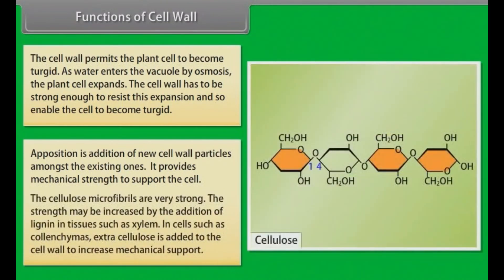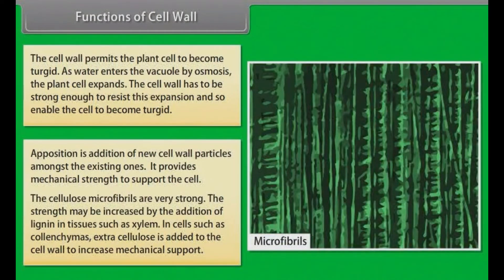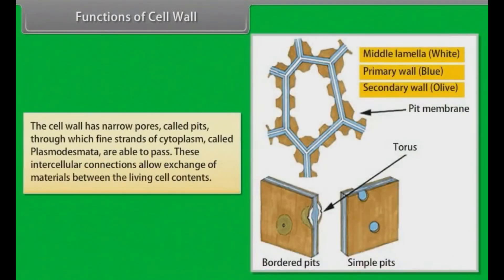The cellulose microfibrils are very strong; the strength may be increased by the addition of lignin in tissues such as xylem. In cells such as collenchyma, extra cellulose is added to the cell wall to increase mechanical support. The cell wall has narrow pores called pits, through which fine strands of cytoplasm called plasmodesmata are able to pass. These intercellular connections allow exchange of materials between the living cell contents.